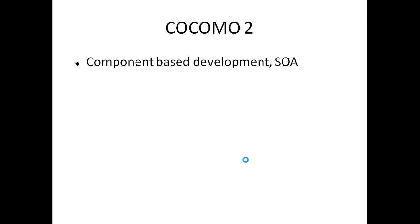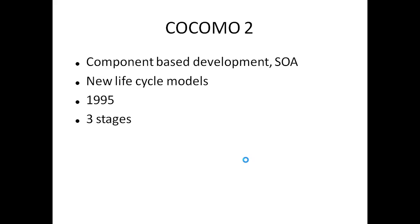COCOMO 2 was proposed by Boehm in 1995. Later we had component-based development, service-oriented architecture, and web-based development. New life cycle models also came, like rapid application development, object-oriented software engineering, and all these models came. So in 1995 he proposed a new model known as COCOMO 2, and we will see this model in detail.